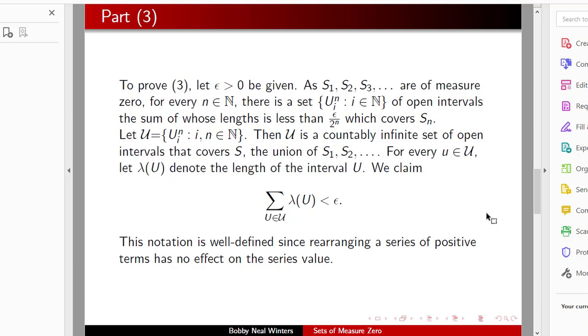Now let's prove three. Let epsilon greater than zero be given. So we have s1, s2, s3 that are all of measure zero, and for every n, there will be a set of open intervals. We'll call it u sub i super n, and we're letting the i vary, because this set of open intervals is going to cover a set s_n.